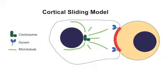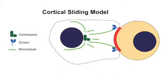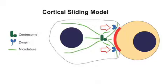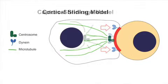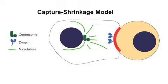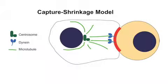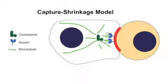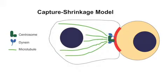Dynein's localization to the center of the immunological synapse would be inconsistent with the cortical sliding mechanism of centrosome repositioning. However, it would be compatible with a different mode of centrosome movement called the capture-shrinkage mechanism, in which cortical dynein binds end-on to a microtubule plus-end and pulls the centrosome towards it through a combination of its motor activity and the force of microtubule depolymerization.